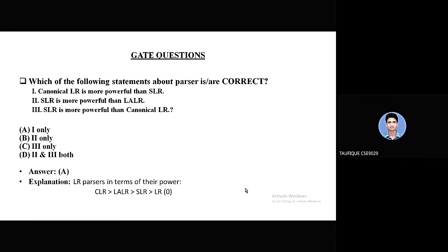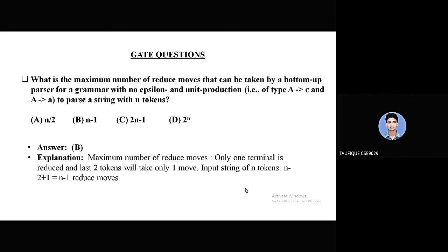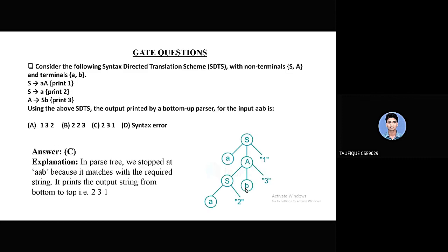For LR parser power, most powerful is canonical LR. Canonical LR is most powerful than SLR. In this slide, I am solving this question: What is the maximum number of reduce moves that can be taken by a bottom-up parser for a grammar with no epsilon and unit production, that is of type A to epsilon and A to B? The answer is n-1 reduce moves. For the parse tree, we stop at aab because it matches with the required string. If we print the output string from bottom to top, that is 231. Answer is B.